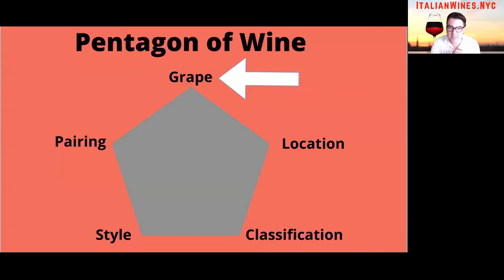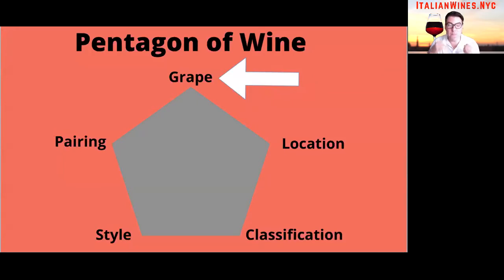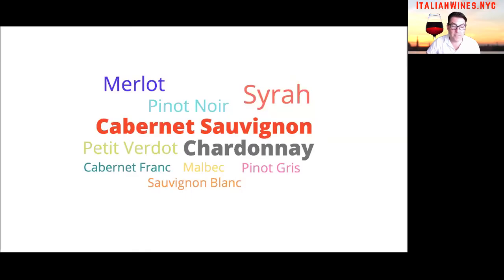Back to our Pentagon of Wine graph. The Pentagon of Wine is your way of organizing massive amounts of info about Italian wine into five general buckets. Native grapes get their own corner on the Pentagon because, apart from the location of the vineyard, the grape varietal has the biggest impact on the taste of wine in your glass.